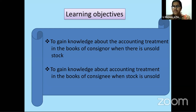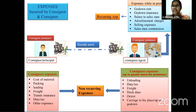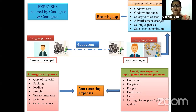We will also gain knowledge about accounting treatment in the books of consignee when stock is unsold. Recapping our previous session: consigner will send goods to consignee — this is called consignment. The consigner sends goods to make more and more profits, and the consignee sells on behalf of the consigner to get commission. When goods are sent, different expenses are incurred by both consigner and consignee. This is one important topic for today — when we calculate valuation of unsold stock, you need to know the difference between recurring and non-recurring expenses at both ends.